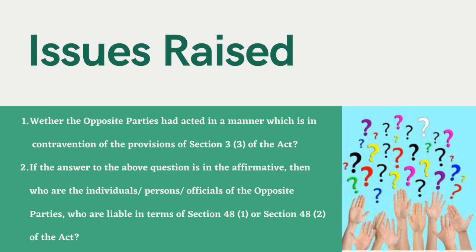The Commission framed the following two issues. Issue 1: Whether the opposite parties had acted in contravention of Section 3, Subsection 3 of the Act in tenders floated by the various divisions or zones of Indian Railways and other procuring entities for procuring different types of CBBs during the period 2009 to 2017 — specifically: (a) by directly or indirectly determining the sale price of different types of CBBs under Section 3, Subsection 3, Clause A; (b) by limiting or controlling the supply of CBBs under Section 3, Subsection 3, Clause B; or (c) by sharing or allocating tender quantities amongst themselves under Section 3, Subsection 3, Clause C.